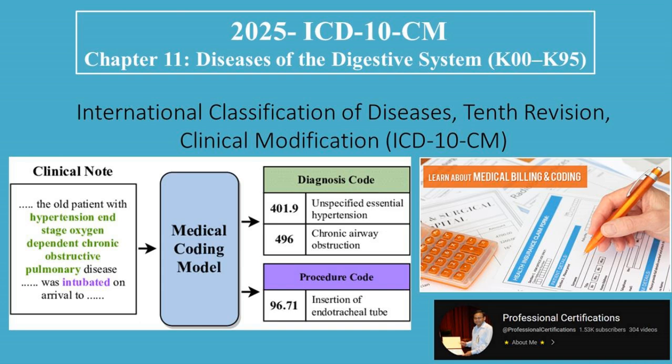Welcome to Professional Certifications Channel. In this video, we're diving into Chapter 11 of ICD-10-CM, which covers diseases of the digestive system, with code ranges from K00 to K95. Whether you're coding for gastroenterology, emergency care, or inpatient services, this chapter is packed with frequently used conditions like gastritis, ulcers, hepatitis, and appendicitis. Let's break it all down.